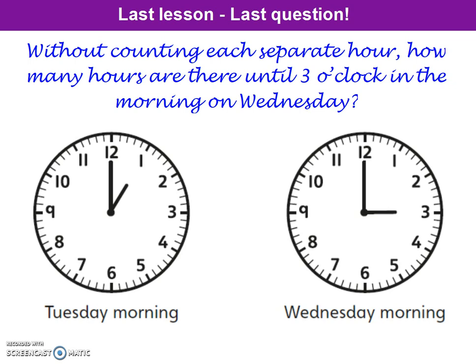Pause the video and calculate that, then come and join me when you've got an answer. We know there are 24 hours in a day, so if it's 1 o'clock in the morning on Tuesday — which we can see on the first analogue clock — we can jump forward 24 hours straight away, which gives us 1 o'clock in the morning on Wednesday. That's 24 hours. Now we count forward from 1 o'clock to 3 o'clock on Wednesday — that's 2 more hours. So 24 plus 2 gives us an answer of 26 hours between 1 o'clock on Tuesday morning and 3 o'clock on Wednesday morning.